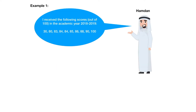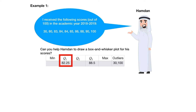Example 1. Hamdan received the following scores out of 100 in the academic year 2018-2019. Can you help Hamdan draw a box and whisker plot for his scores? In order to draw a box and whisker plot, we need to find the five-number summary measurements and to find the outliers. In a previous video, we helped Hamdan find Q1, Q3, and the outliers. If you want to watch these videos, please see the links below.